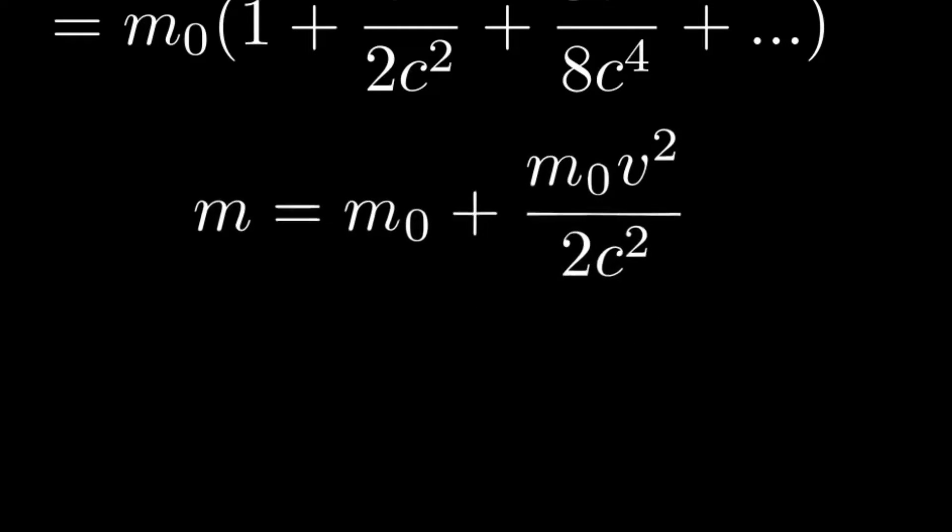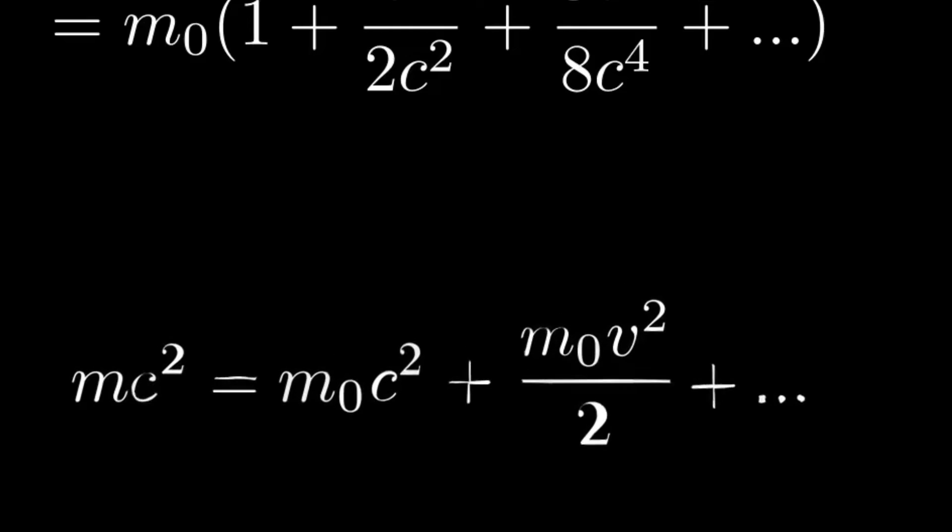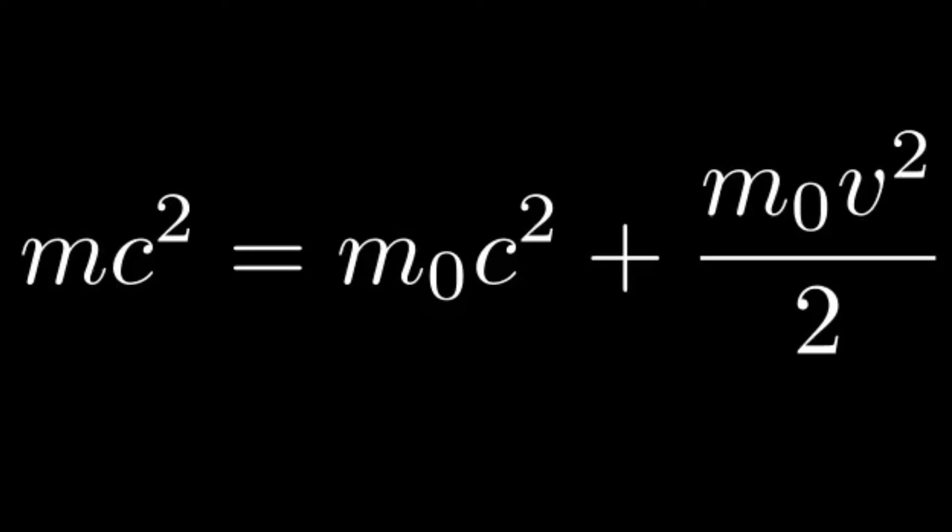Let's multiply both sides by c squared and this is remarkable. mc squared, the total energy of a body, is equal to the rest energy m naught c squared plus its kinetic energy.